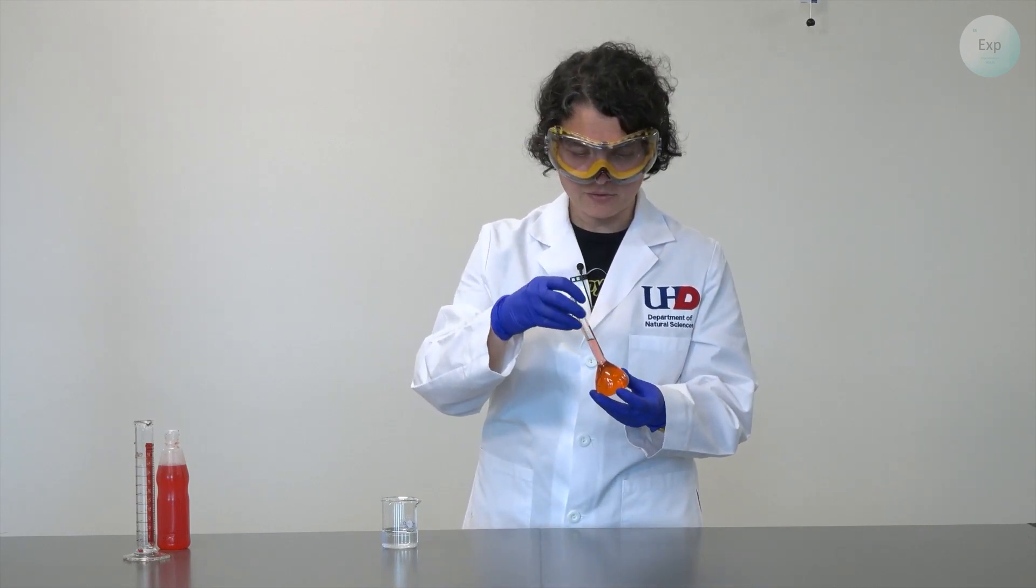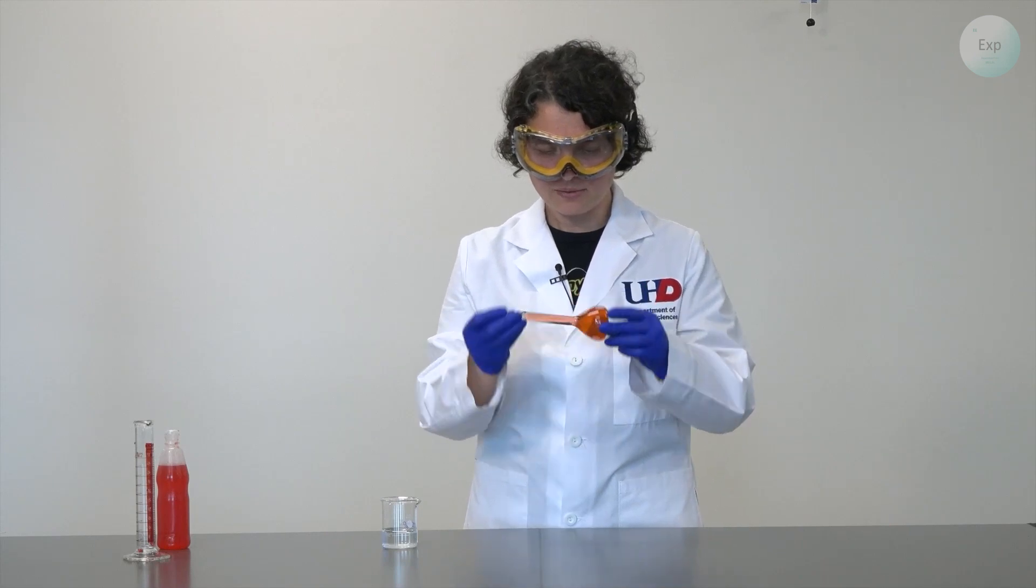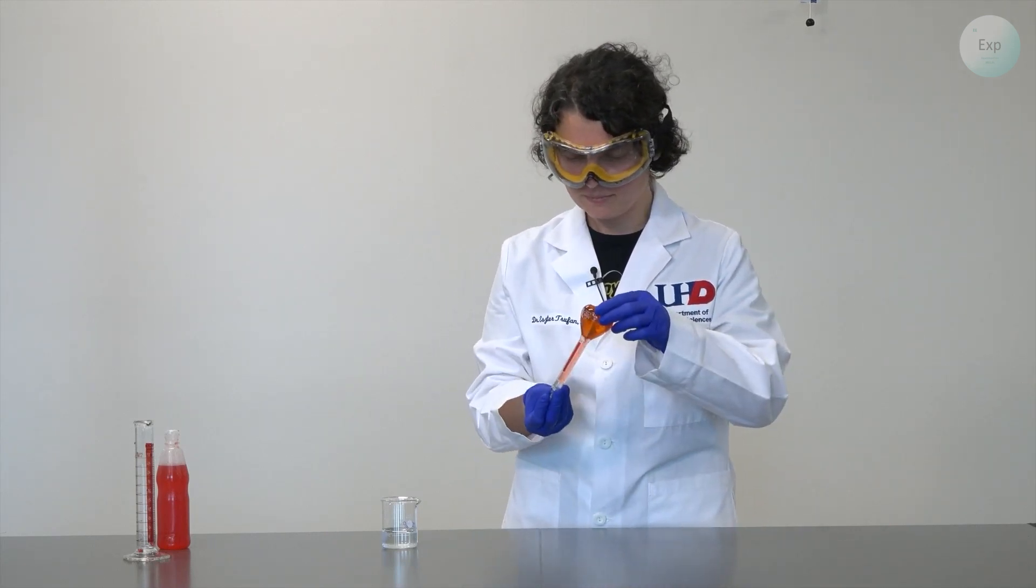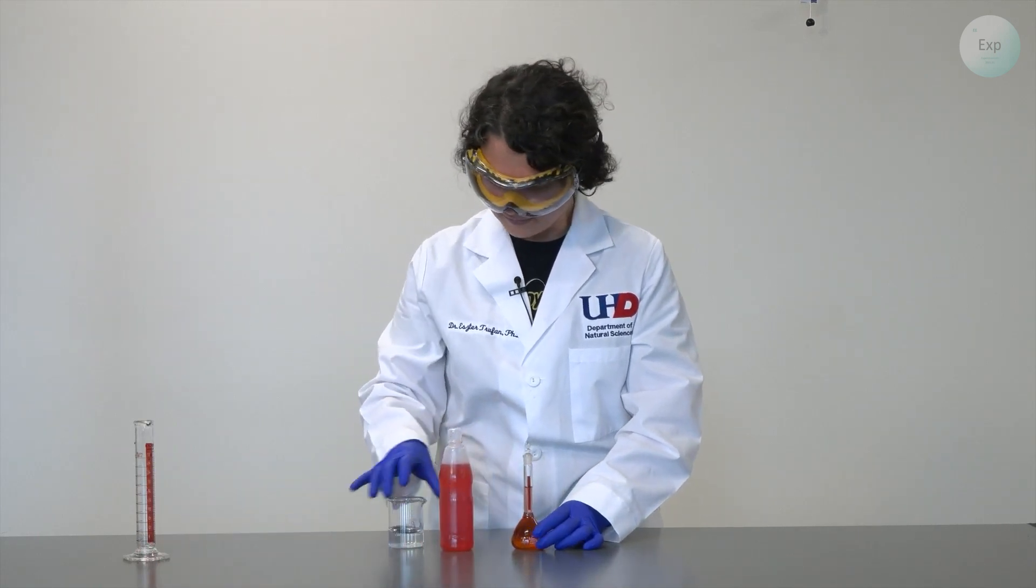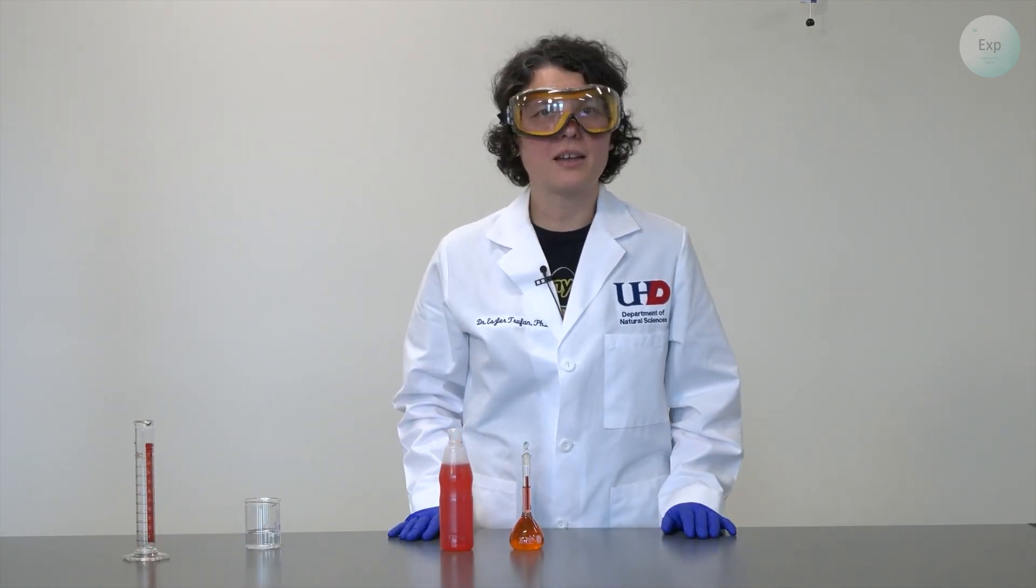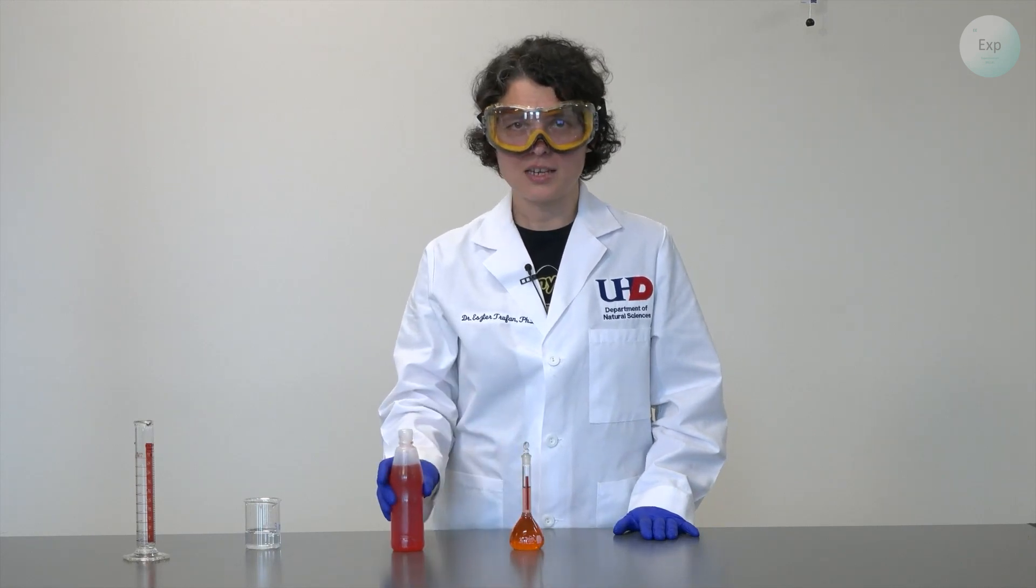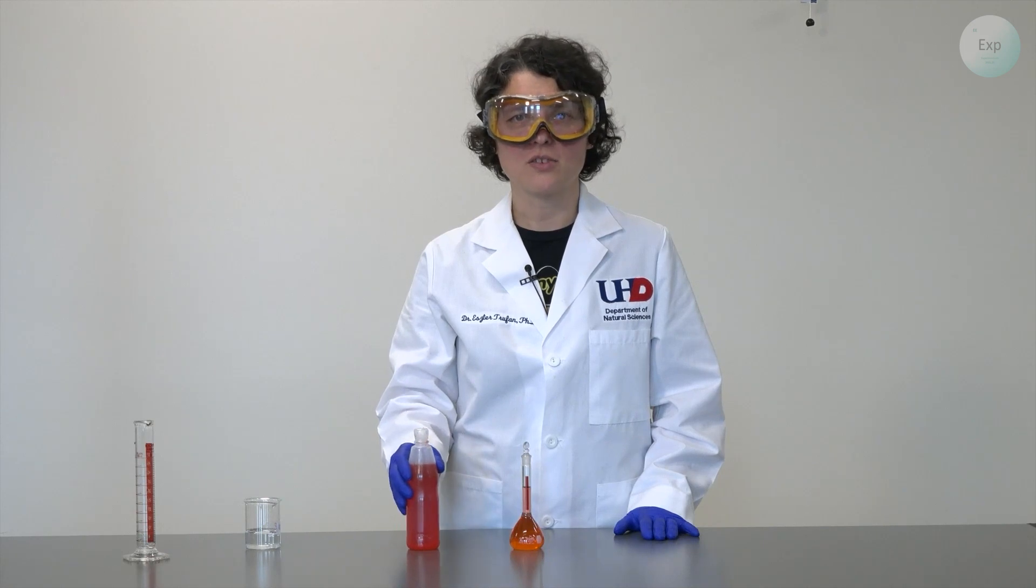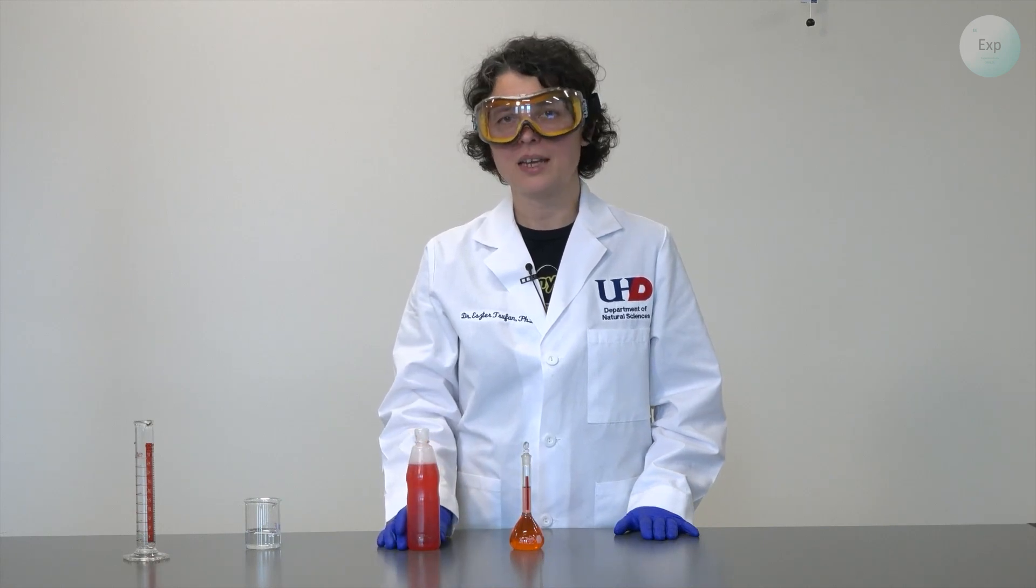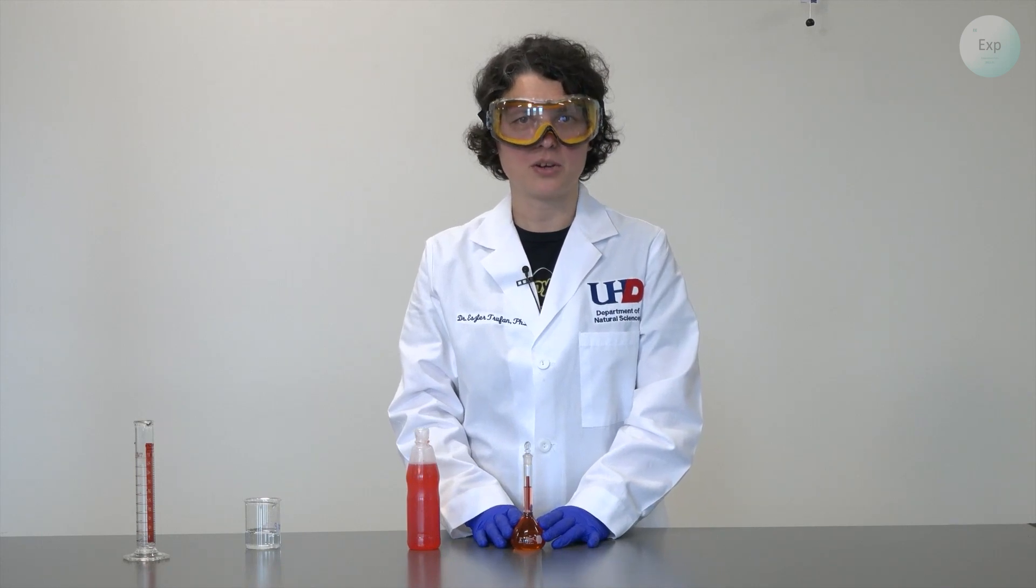We know the original amount of solute that we added even though it was from a juice concentrate. There are a couple ways in which we can find the exact concentration of the solution that we just made. One of which is to search for the concentration of the juice concentrate and simply do a dilution calculation. That will get us approximately in the right neighborhood.